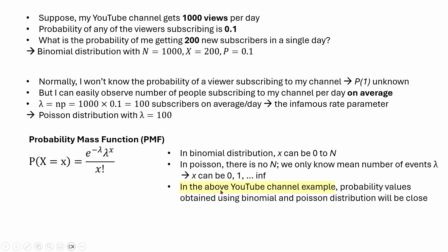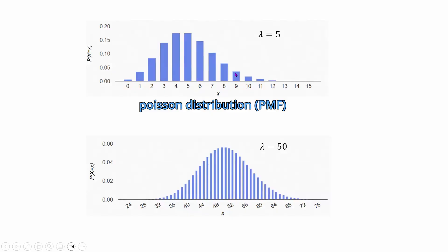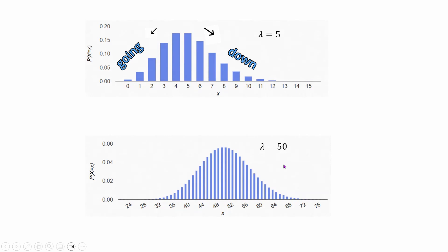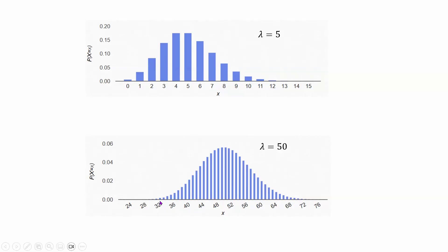In the above YouTube channel example, if you calculate the probability of getting 200 new subscribers using binomial distribution and using the lambda parameter of the Poisson distribution, the probability values will be very close. This is how the Poisson distribution PMF looks: when lambda equals 5, at x equal to 5 we have the highest probability, and then the probabilities keep going down on both sides. If you set lambda equal to 50, we can see that around 50 there is the peak, and probabilities gradually decrease for events far above or below 50.